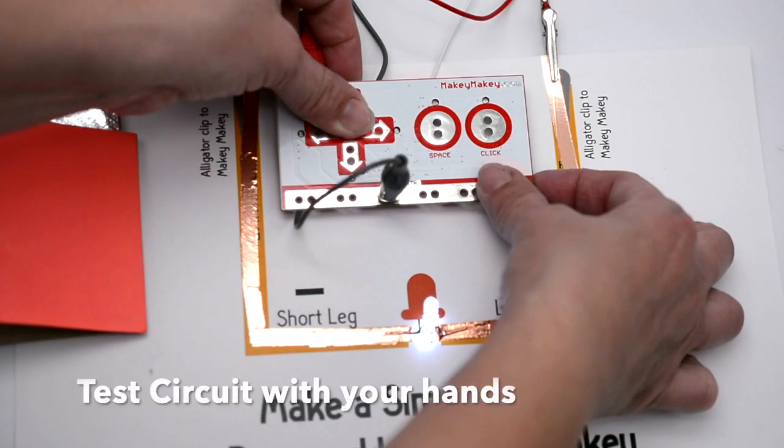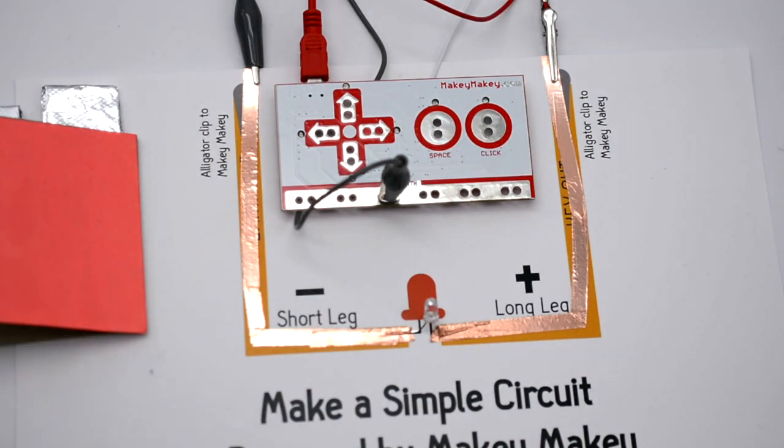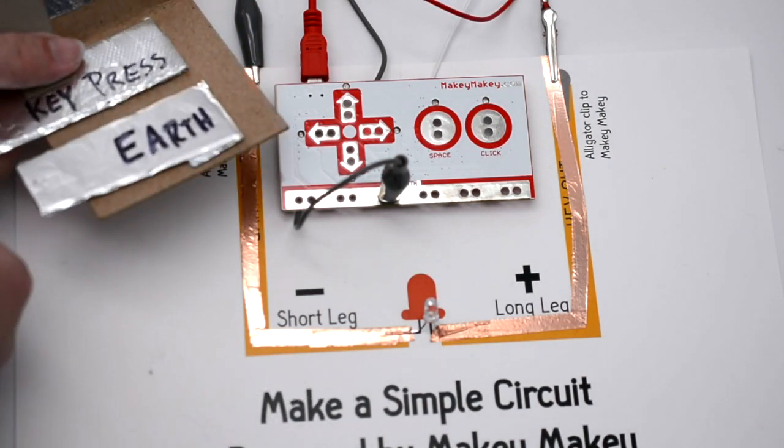Now if you use your hands, you can test your circuit and see if your LED comes on, hold earth and touch any key press. This is going to light up your LED on any key press.